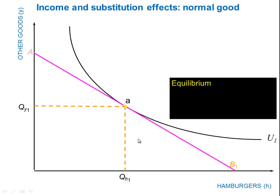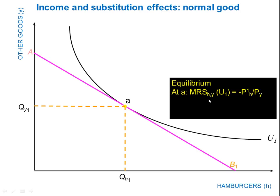They're maximizing their satisfaction given the budget constraint. This consumer, Martin, is consuming QH1 hamburgers and QY1 other goods. They are optimizing at equilibrium point A. This can be expressed more formally: the slope of the budget line — the relative prices — is equal to the slope of the indifference curve, given by the marginal rate of substitution. So we can say the marginal rate of substitution of hamburgers for other goods, given that we're on indifference curve U1, equals the price of hamburgers P1, relative to the price of other goods PY.